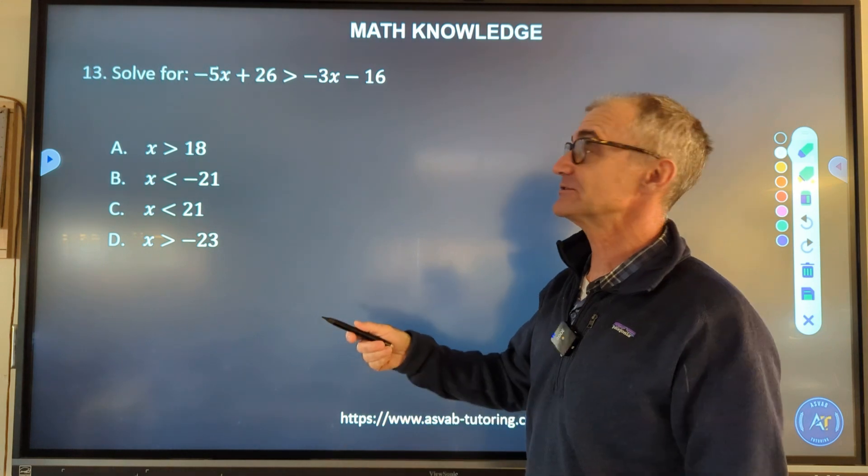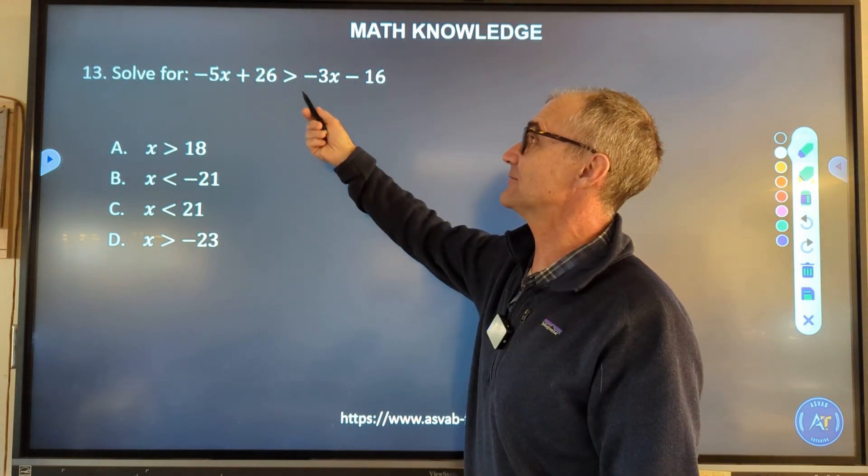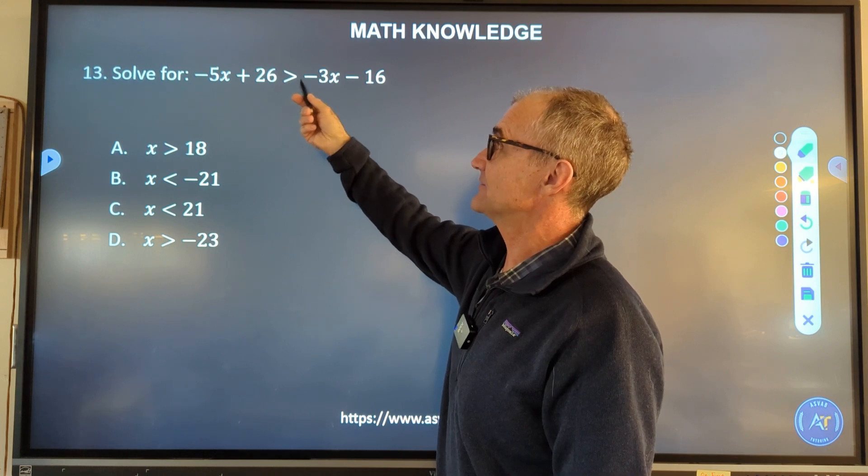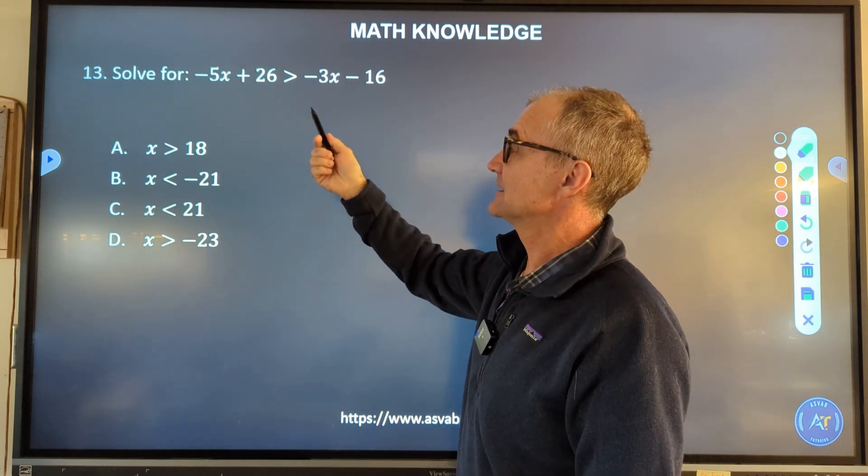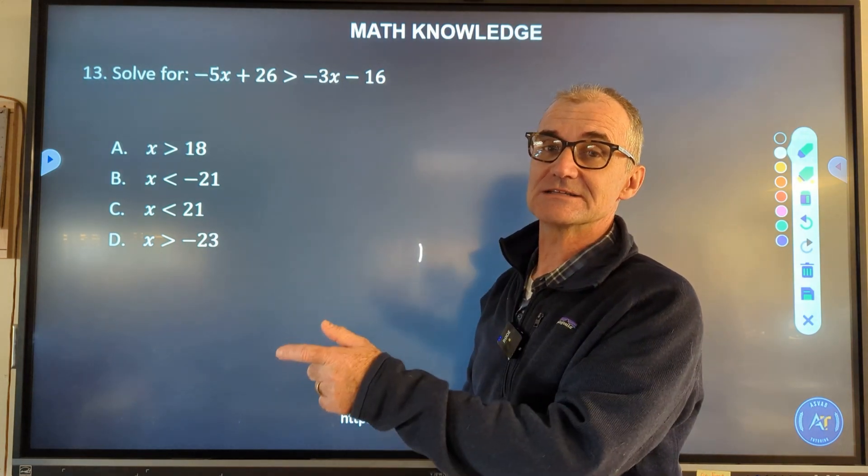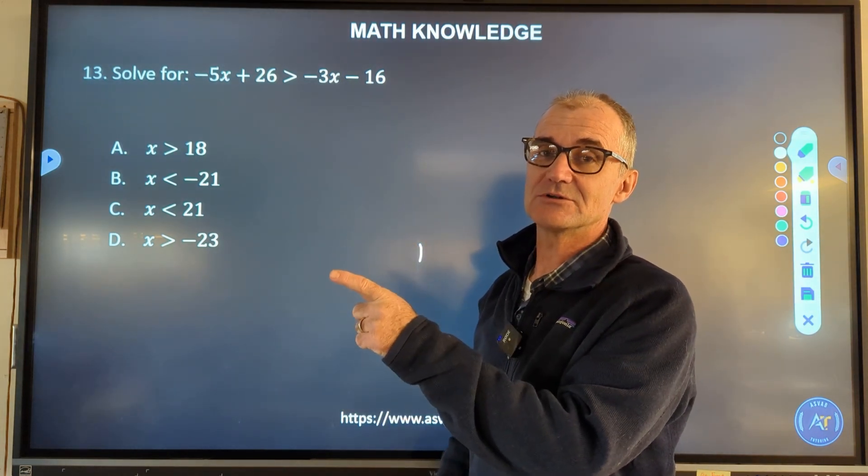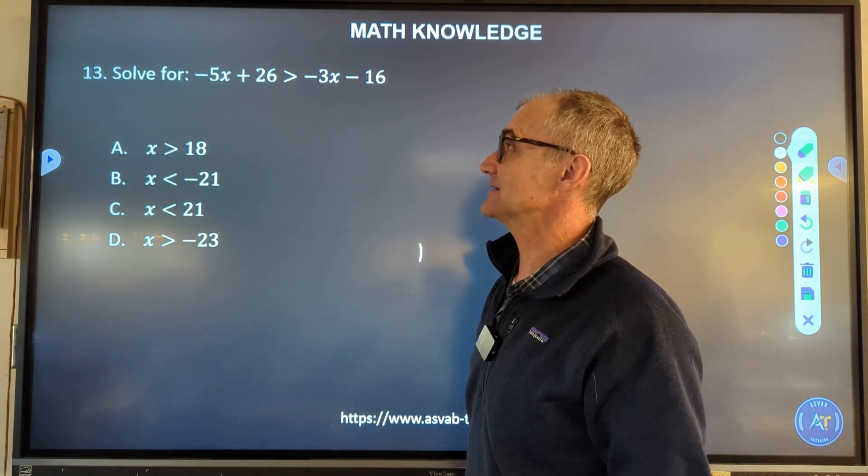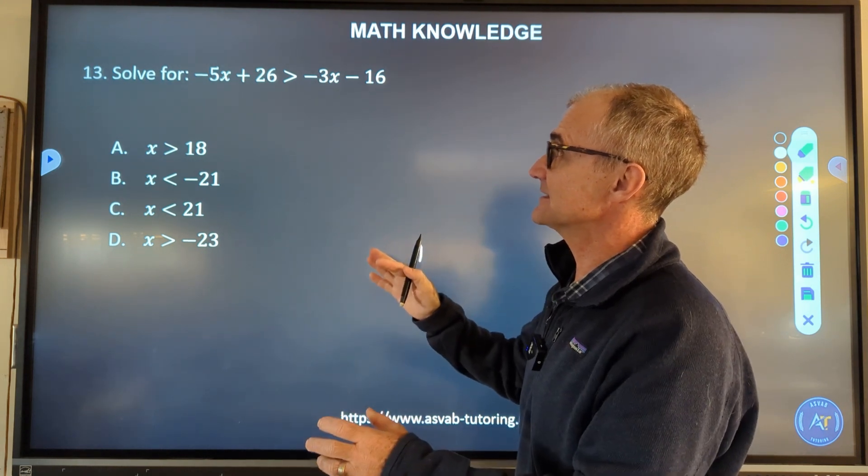Number 13, very similar to an equation. This is an inequality because there's no equal sign, it is greater than. If there's a line below it, it's greater than or equal to. The thing about an inequality, it's identical to an equation except for there's one really key rule: if I multiply or divide by a negative, I got to flip that sign around.